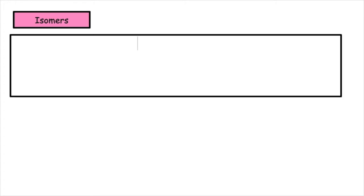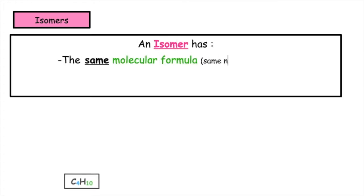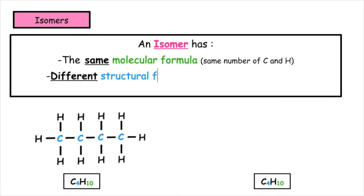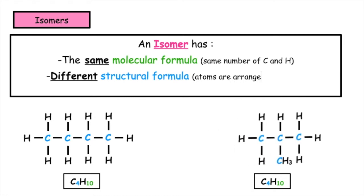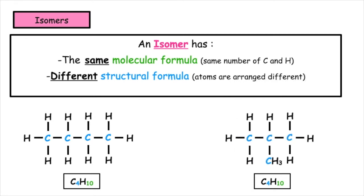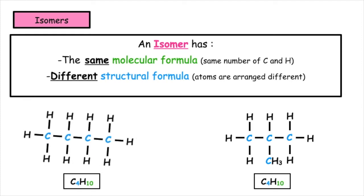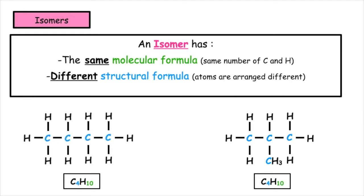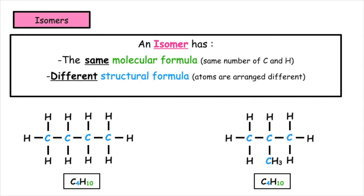Alkanes can form isomers. An isomer has the same molecular formula, which means it has the same number of carbon and hydrogen atoms, but a different structural formula, meaning that the atoms are arranged differently. The example we can see at the bottom is a straight-chained alkane known as butane, and we've changed the arrangement of the atoms to form an isomer of butane, which we'll learn how to name in this video.